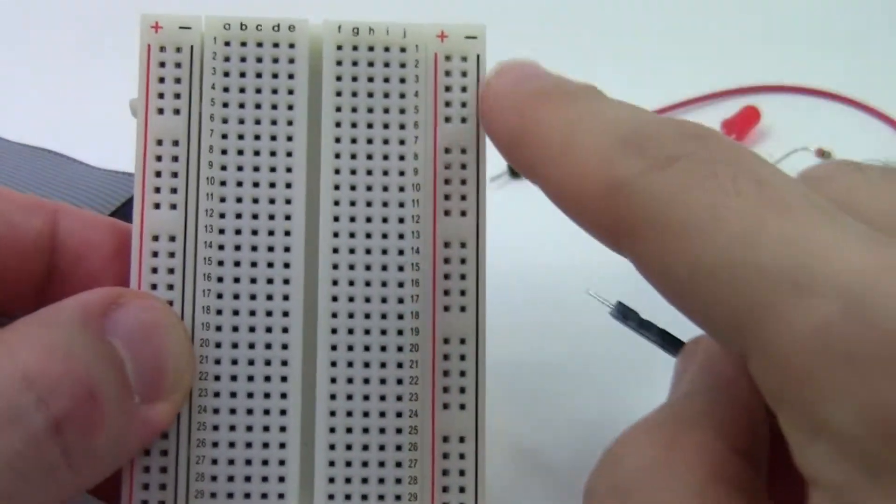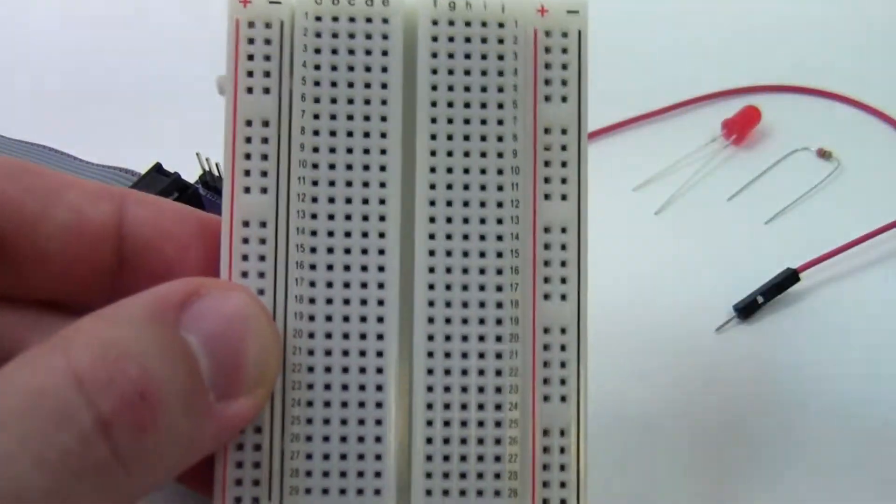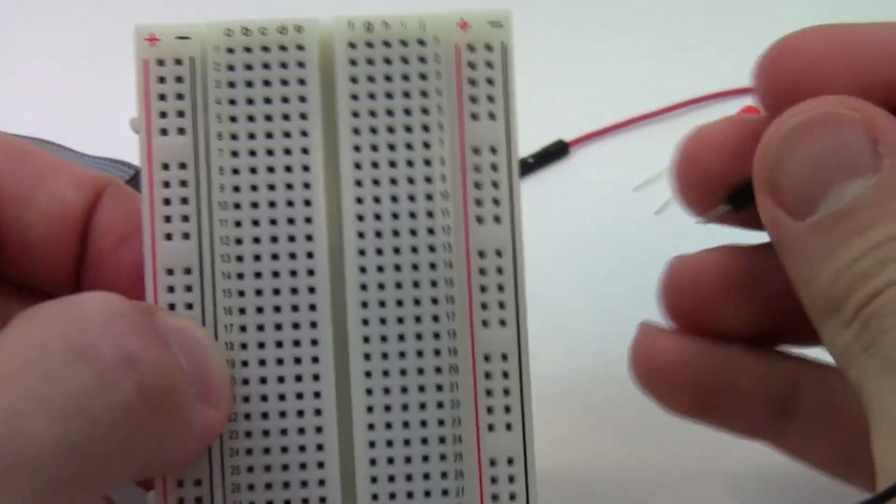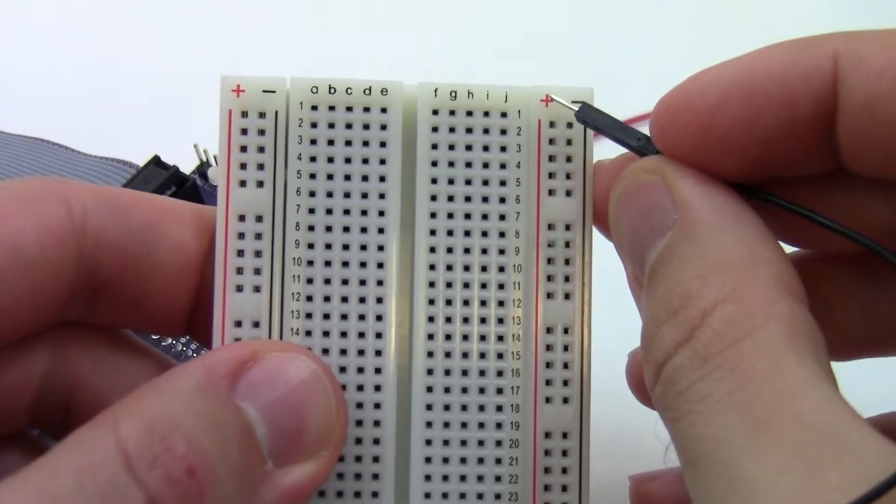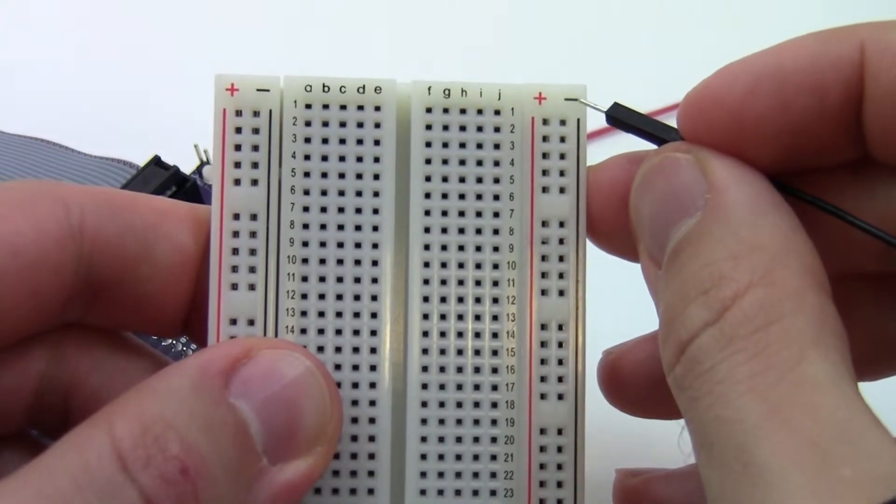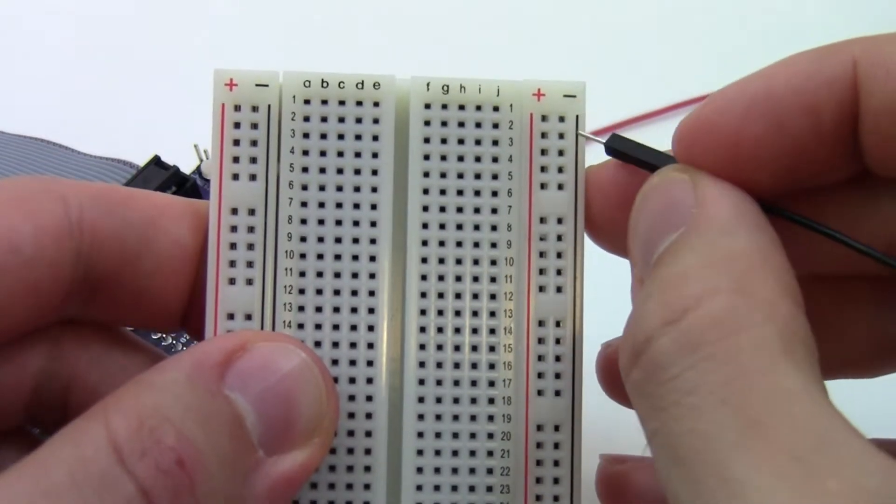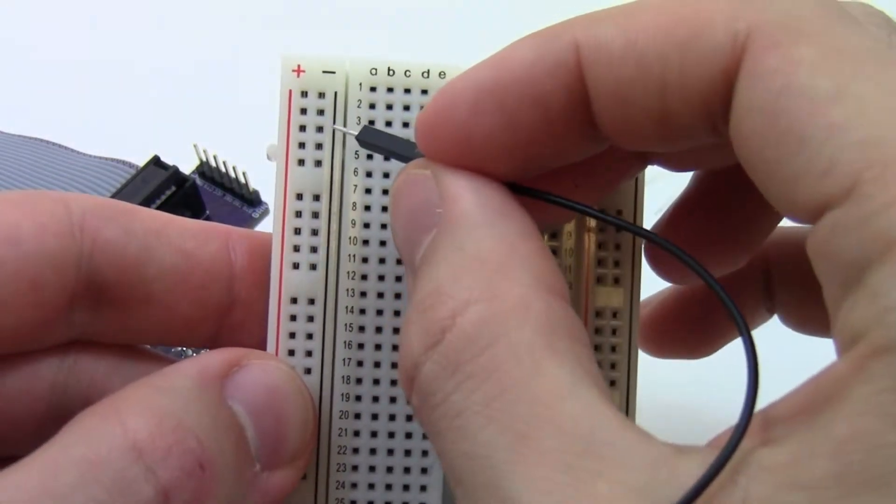The breadboard also has two long strips on either side, called buses, that are used to supply electrical power to a circuit. There is a power bus labeled with a red plus symbol and a red line, and a ground bus labeled with a black minus symbol and a black line. And there's one pair of those on each side of the breadboard.